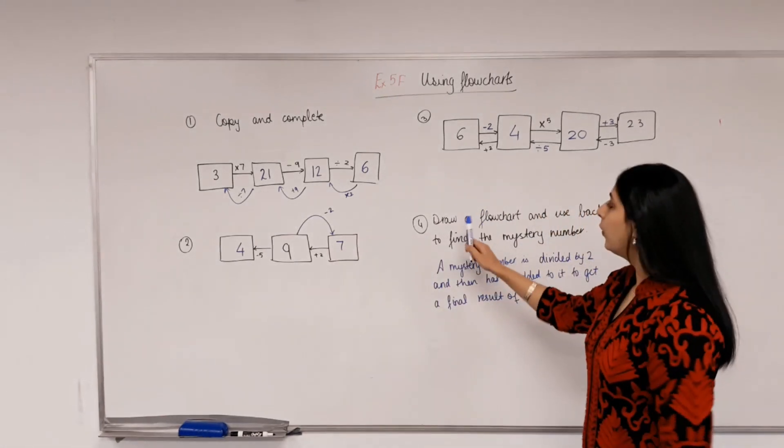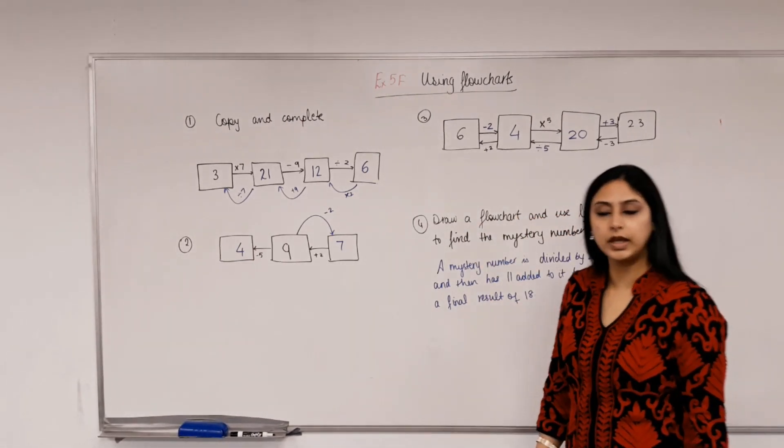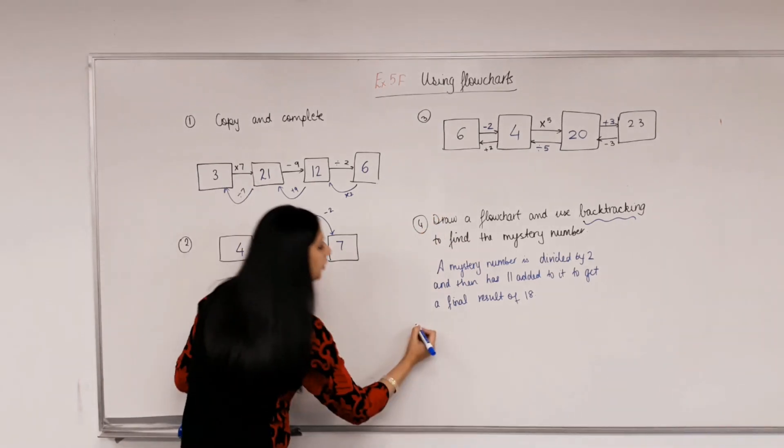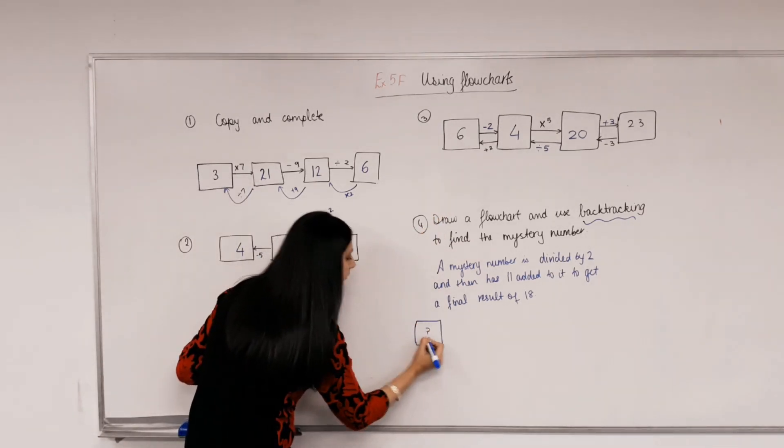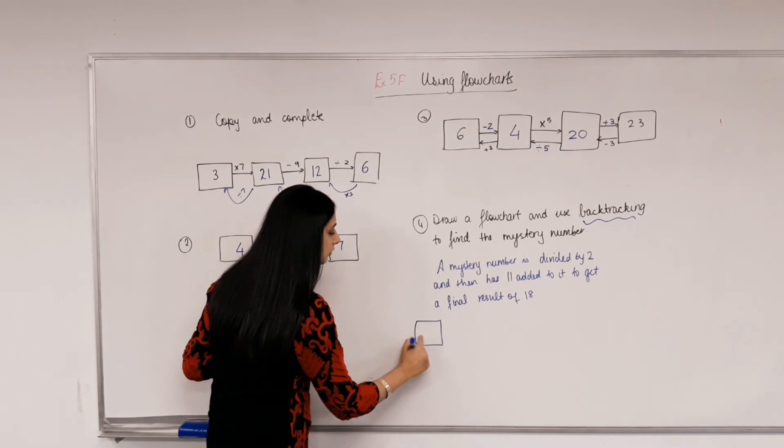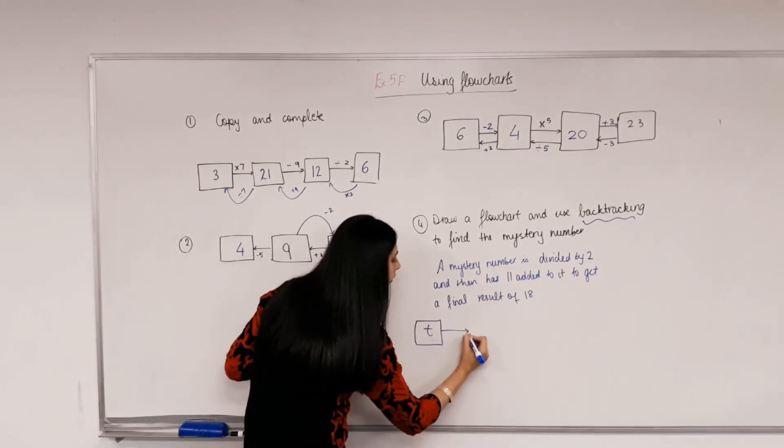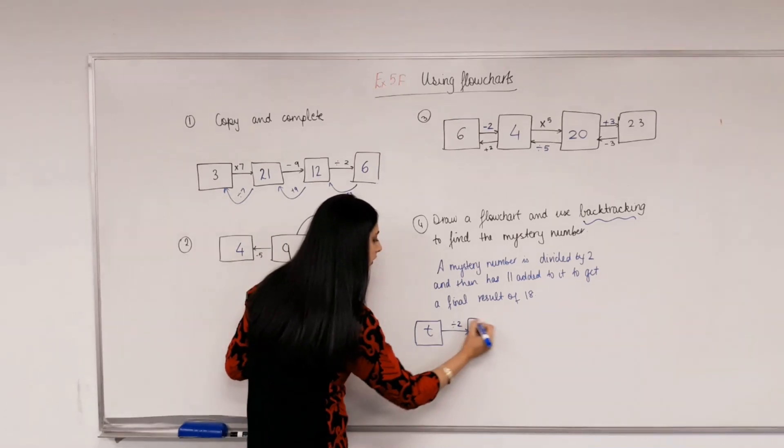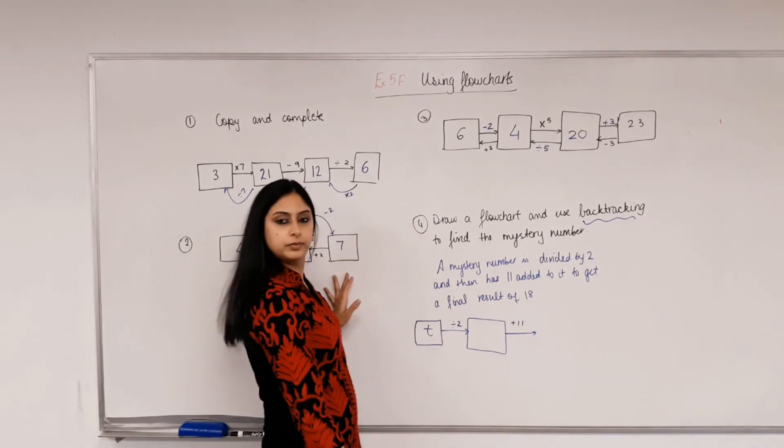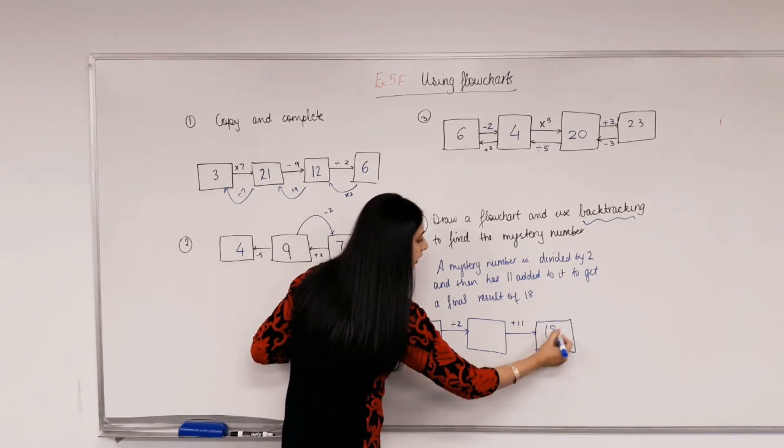Now, the last question. We now have to draw a flowchart to find the mystery number and then use backtracking. Backtracking is going the opposite way. So, let's first construct a flowchart. A mystery number is divided by 2. So, I'm going to write that this is our mystery number. We don't know what it is. Can I use a pronumeral? Which pronumeral do you want me to use? X. T. Let's say T. Because sometimes people think we can only use X. Alright. It's divided by 2. So, can I write divided by 2? And then, has 11 added to it? Is that right? Pens down. And what's the final result? 18.